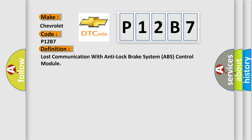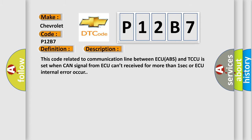And now this is a short description of this DTC code. This code related to communication line between ECU ABS and TCCU is set when CAN signal from ECU can't be received for more than one second or ECU internal error occurs.